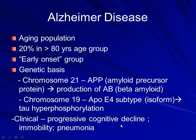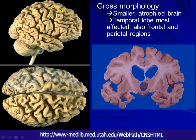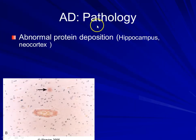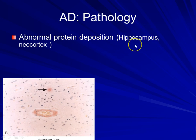Clinically, patients will experience progressive cognitive decline and progressive immobility, and eventually they will succumb to conditions such as pneumonia. Grossly, the brain is actually visibly atrophied — it is lighter if you were to weigh it — and we can see that the temporal lobe is the one most affected. So if you were to do an MRI of this patient, you will see that the sulci are actually deeper and widened due to cerebral atrophy. In terms of microscopic morphology, we can see the actual abnormal protein deposition, and these proteins will deposit in areas associated with memory, such as the hippocampus or the neocortex.